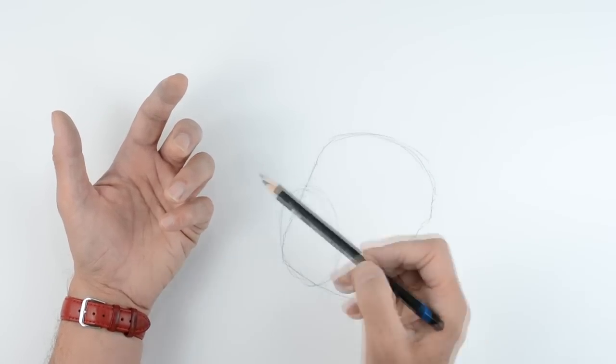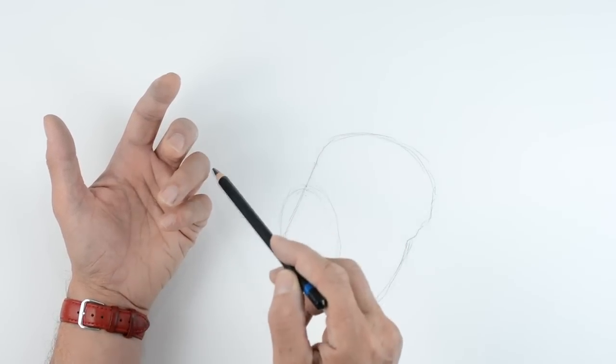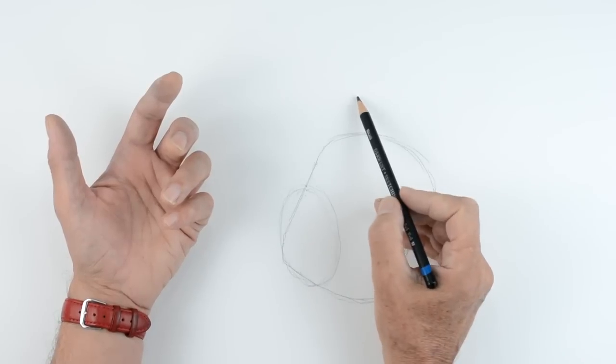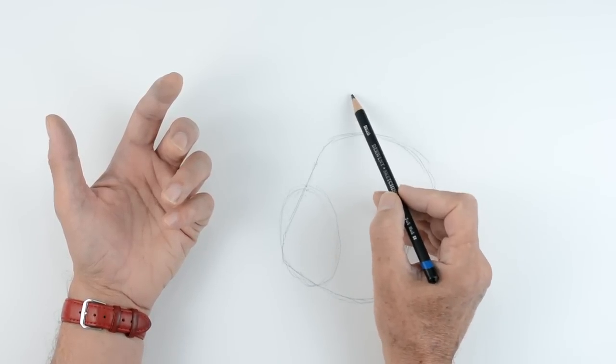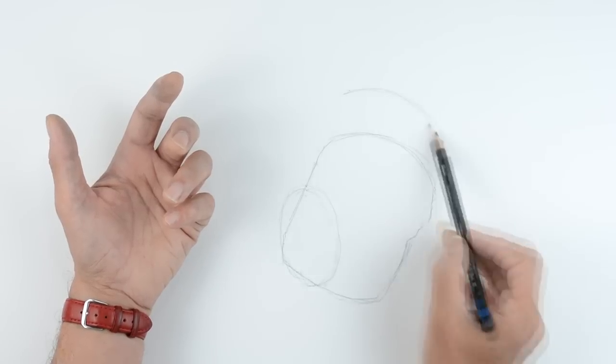Now as far as the fingers are concerned, we're looking at the curve that runs through here and through each of the knuckles. So the curve is going to be approximately here. I'm just going to draw that curve coming around.